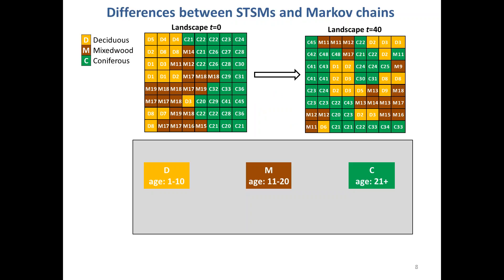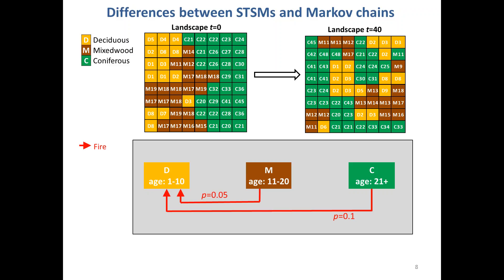One question we get asked all the time is: doesn't this just look like a Markov chain — how is it any different? There are several differences that are critically important and fundamentally distinguish an STSM from a simple Markov chain. The first is that you can track the age of each cell over time. And once you're tracking age in your model, you can make some of those transition probabilities conditional upon the age of each cell over time — that's one of the key differences.